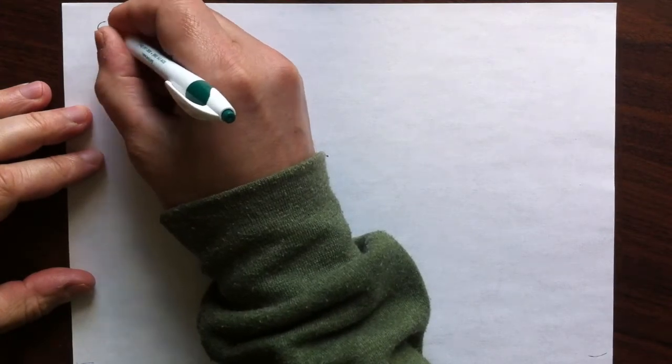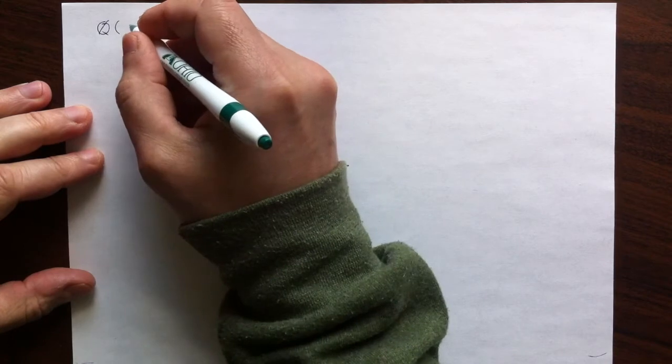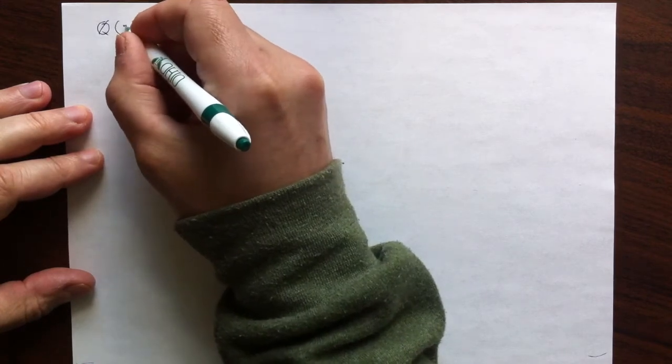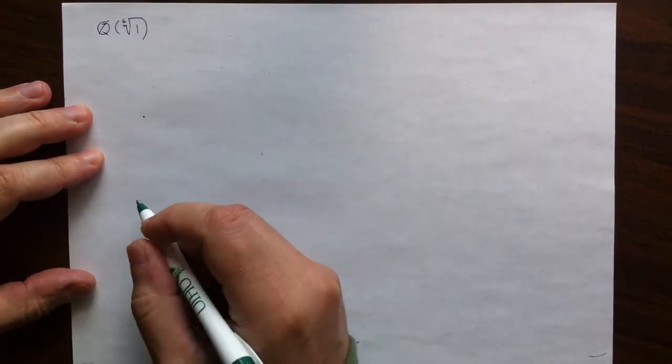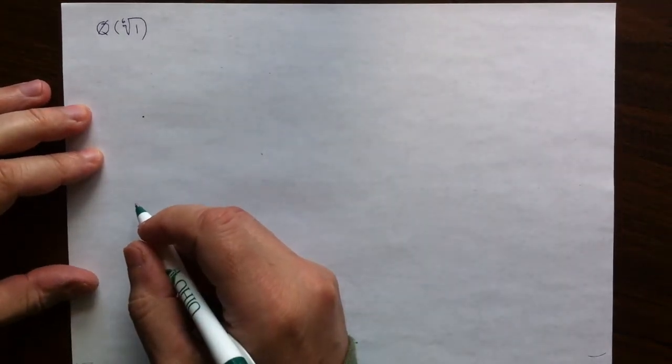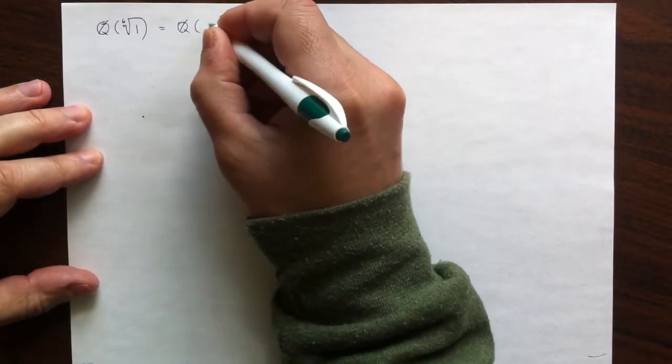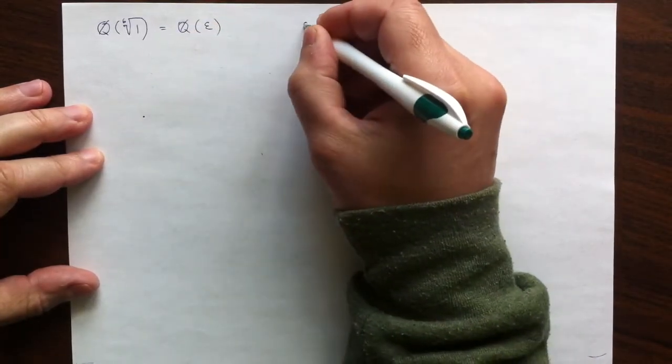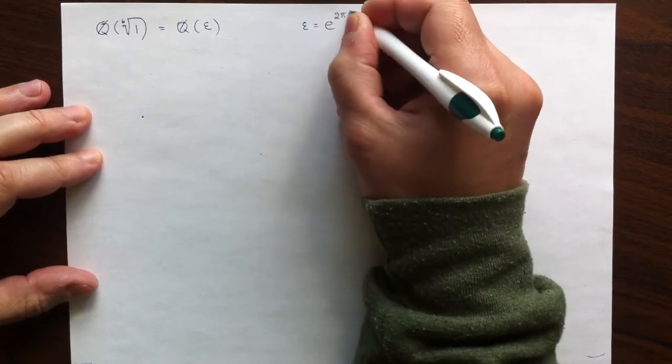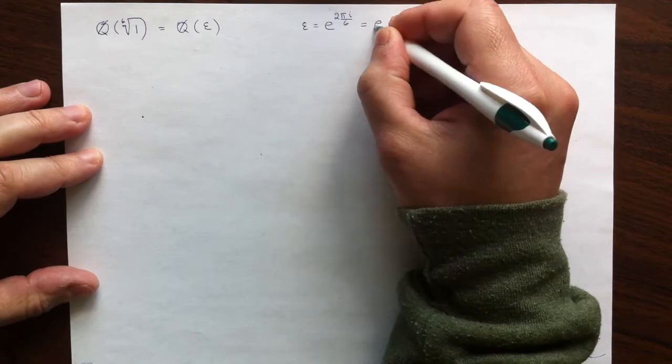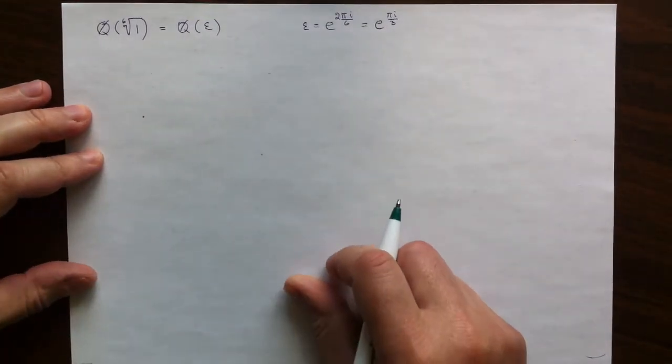That will be an example of cyclotomic Galois extension of conductor 6. So that is the result of attaching all roots of degree 6 to the rational numbers, all roots of 1. We know that it is enough to attach just one of them, say this one, 2πi over 6, which is an easier way, 2πi over 3, the argument of.